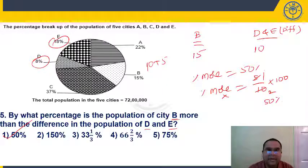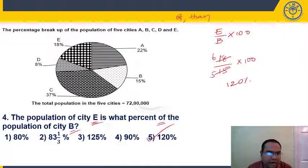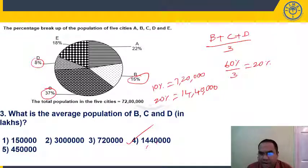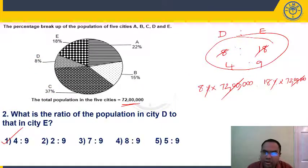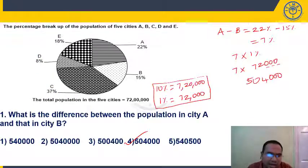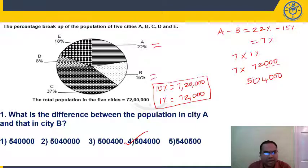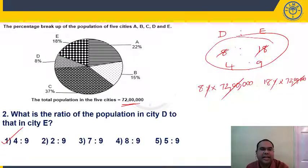For questions 1 to 5, observe that we did not pre-calculate actual values. In Q5 and Q4, no actual values needed. In Q3, we worked on percentage and only at the end multiplied by 72 lakhs. In Q2 and Q1, we worked on percentage throughout. Don't waste time converting all percentages to values upfront.